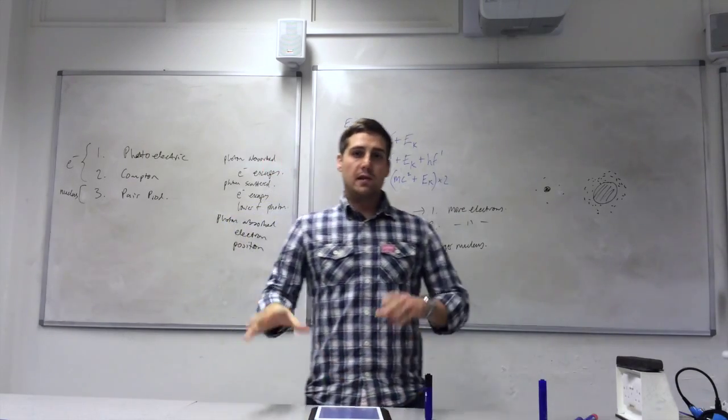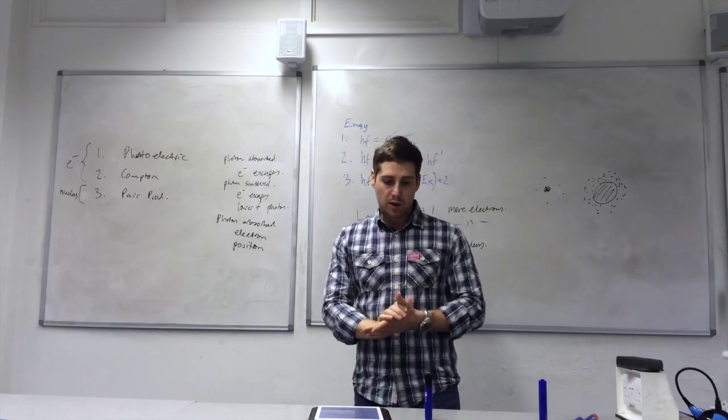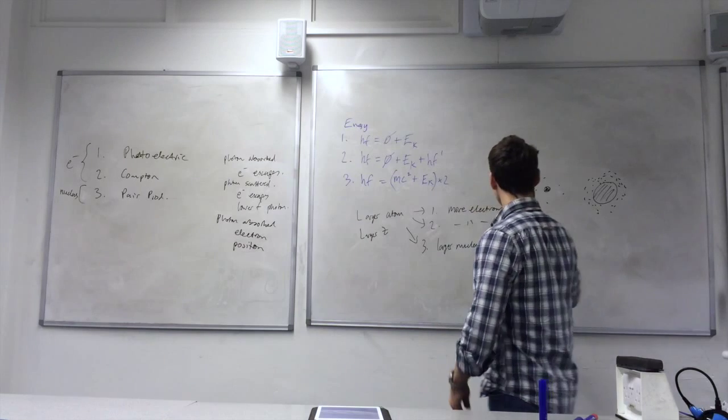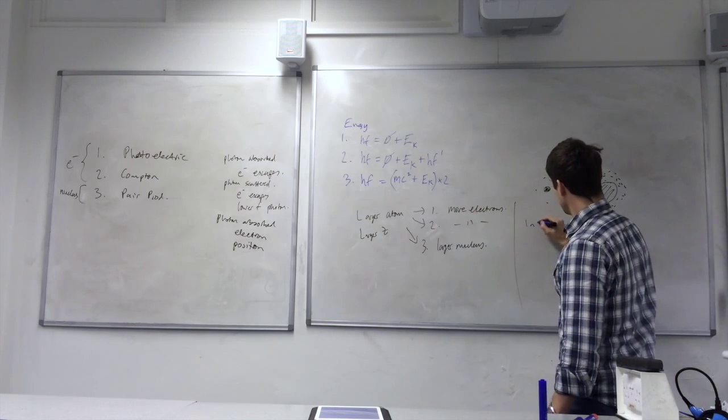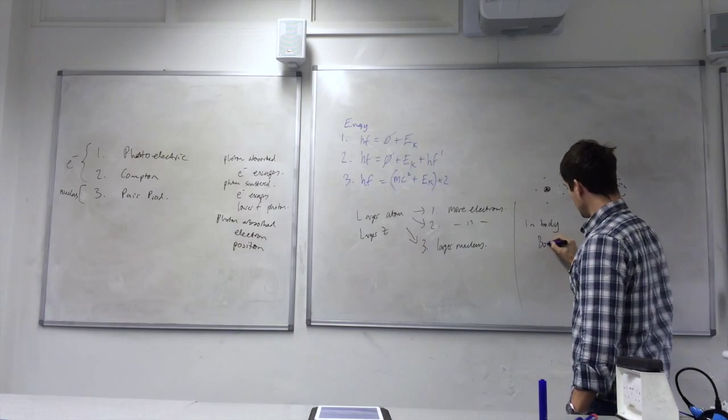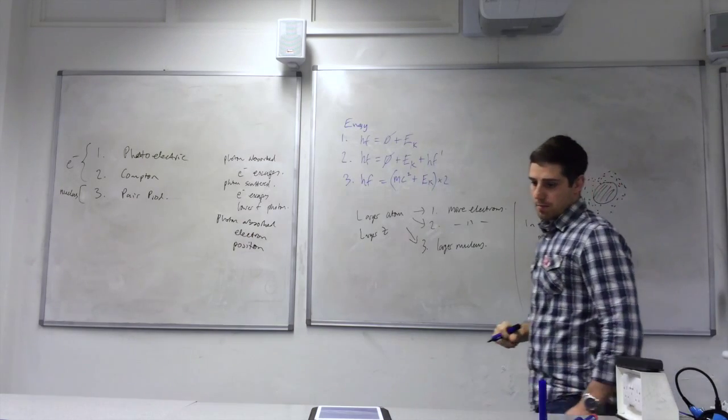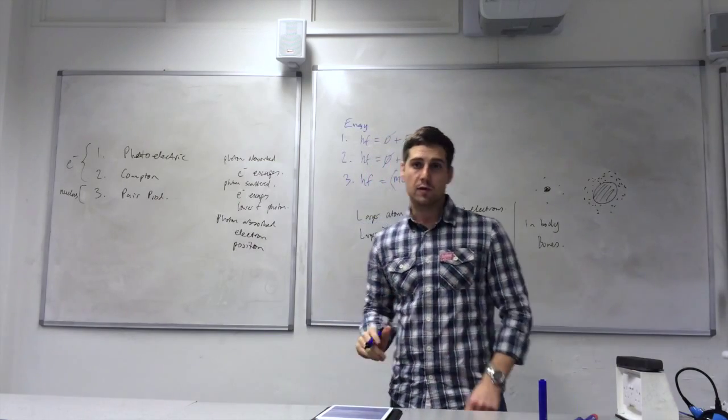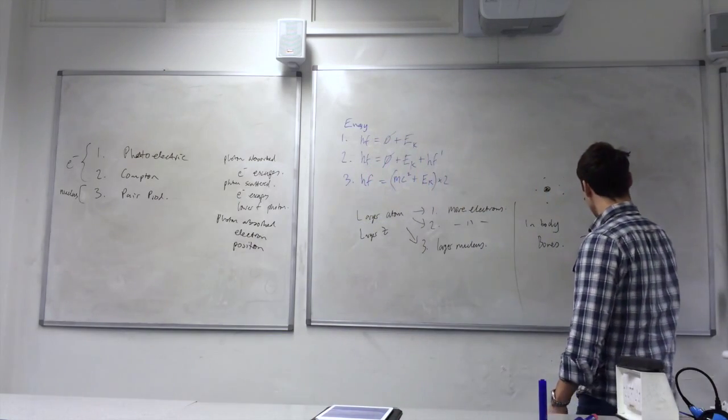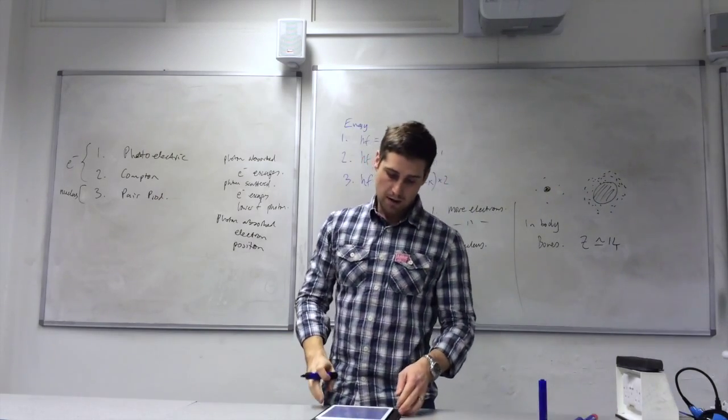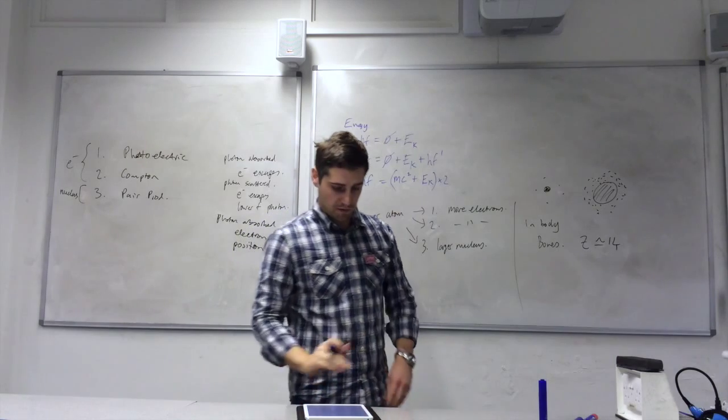Okay. So, let's relate this to what's going on in the body, then. So, in the body, you have bones. Bones have, because of the calcium content, have a Z-number of about 14, an average, a mean atomic number.